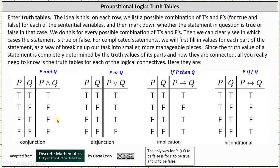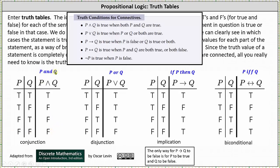First we have the truth table for p AND q. p AND q is true only when p is true and q is true; otherwise p AND q is false. Next we have the truth table for p OR q. p OR q is false only when p is false and q is false; otherwise p OR q is true.